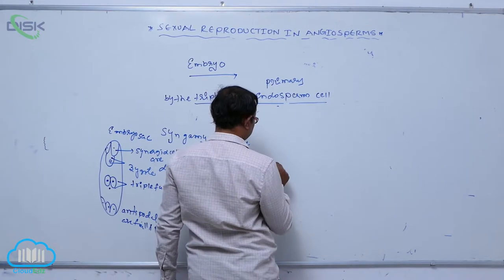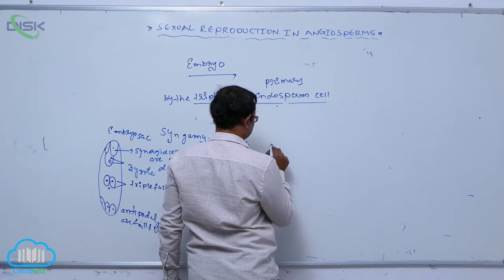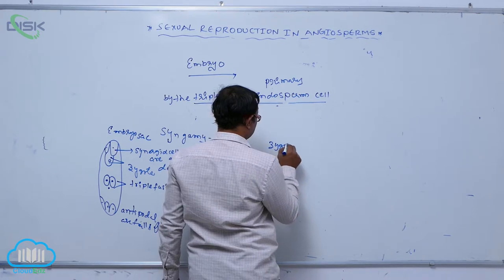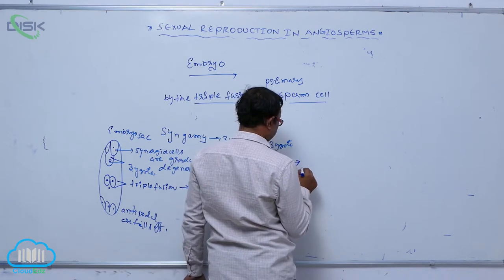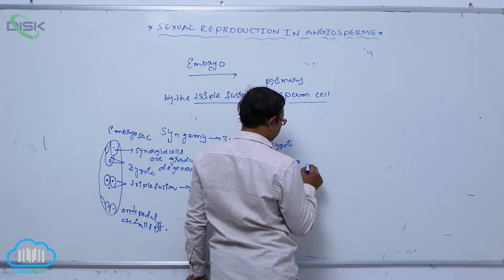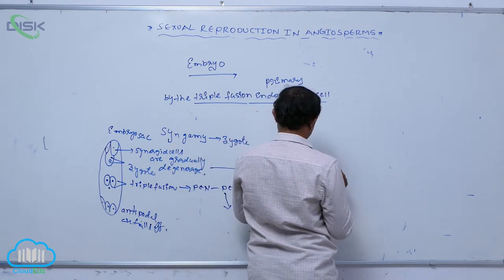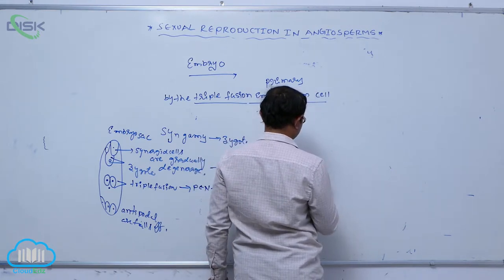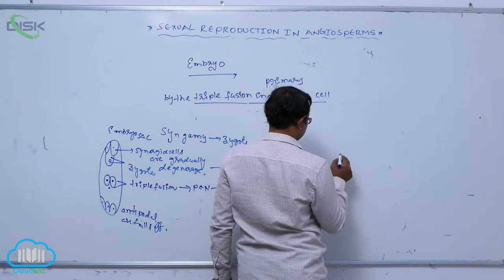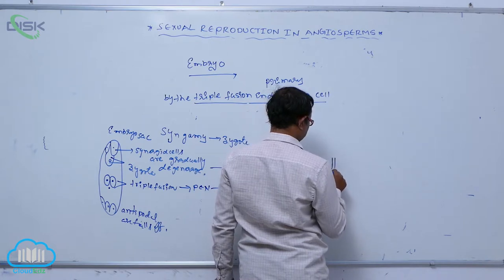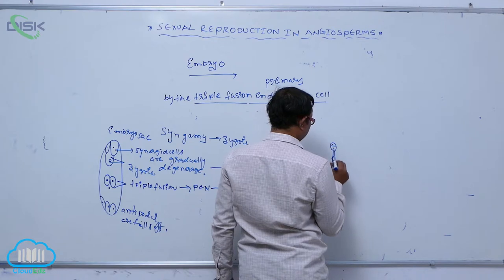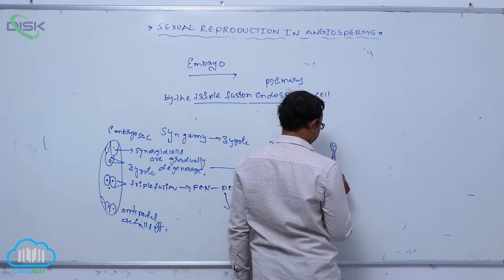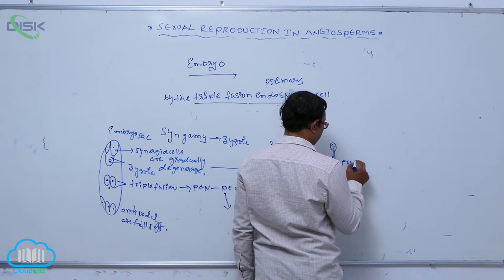After the zygote, so the zygote is converted through divisions to produce the embryo. That is known as the pro-embryo.